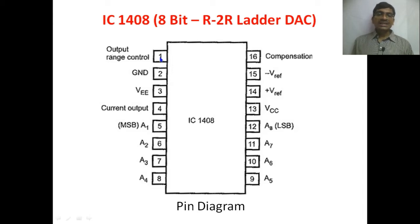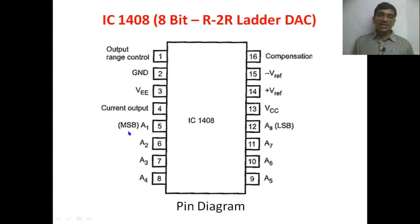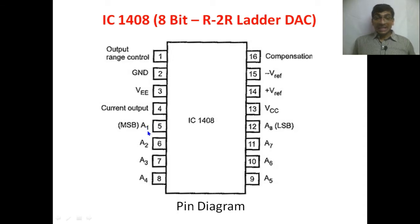Starting from pin one: pin number one is the output range control, pin two is ground, pin three is negative voltage which is VEE, and pin four is the current output. Pin five is A1 which is the MSB bit — this is an 8-bit R2R ladder. From A1 to A8 we have 8 bits, where A1 is the MSB and A8 is the LSB. A1 is given to the fifth pin and A2 is given to the sixth pin.